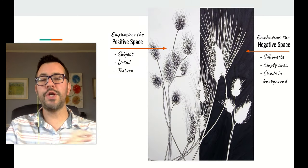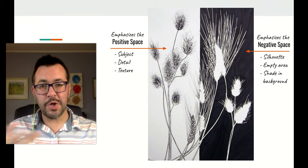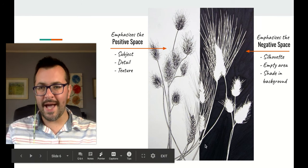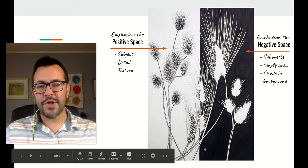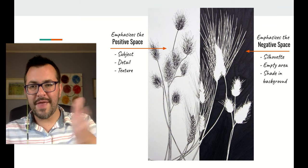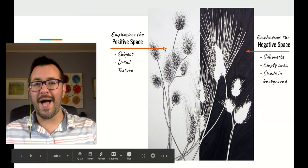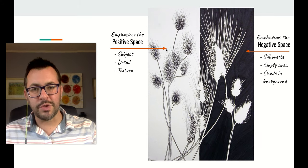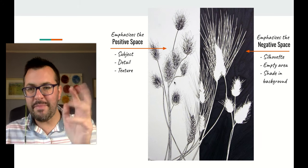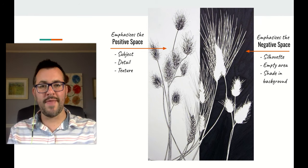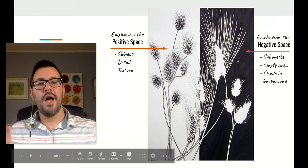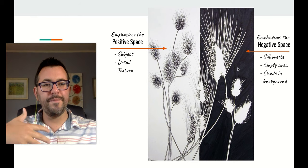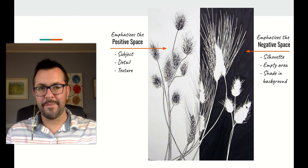Or you can do one drawing and split it. In this drawing of these lovely plants, the artist has split it right in half vertically, straight from top to bottom. You would draw this first, then split it. On the left side, they've emphasized the positive space because the subject is full of detail and texture — you can see the individual little marks made for the fluffy bits on the plant. On the other half, they emphasize the negative space by filling it in and leaving the silhouette of the subject blank.